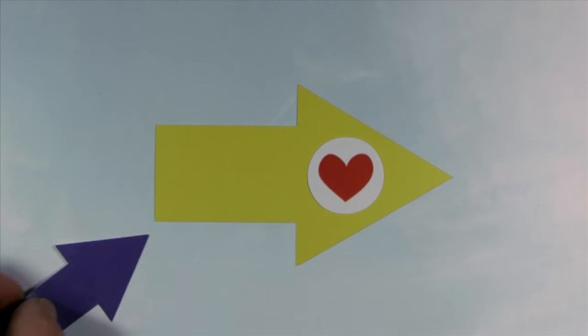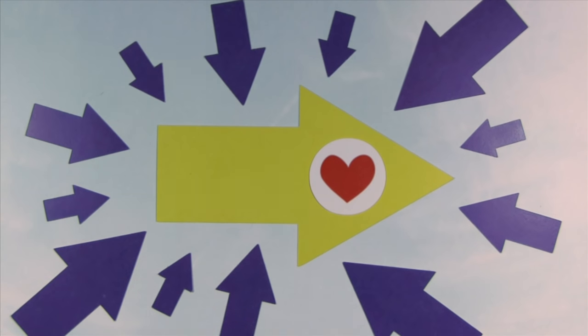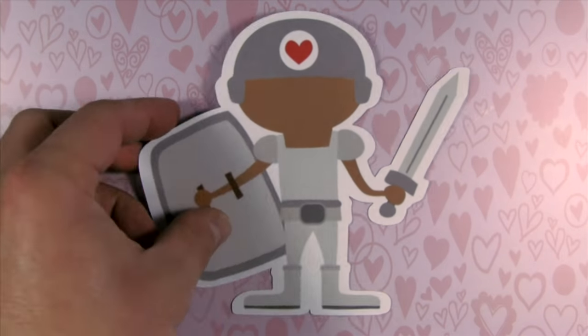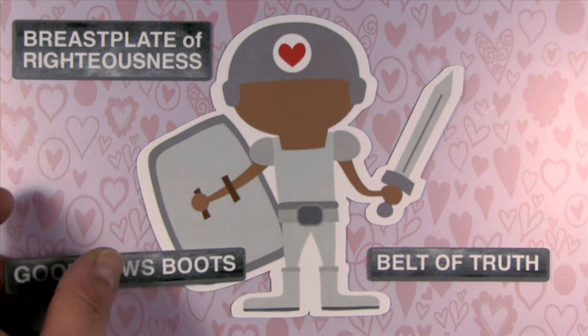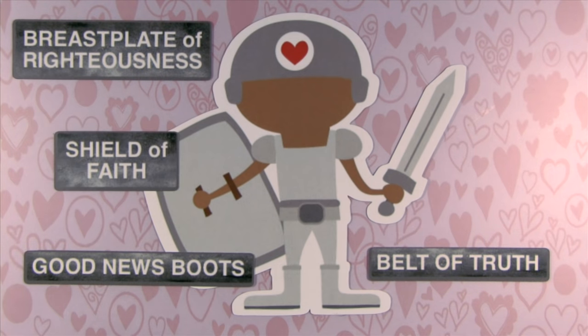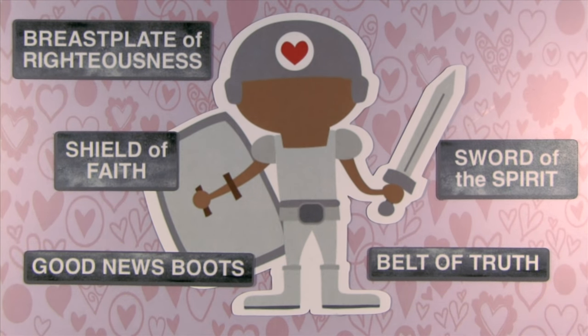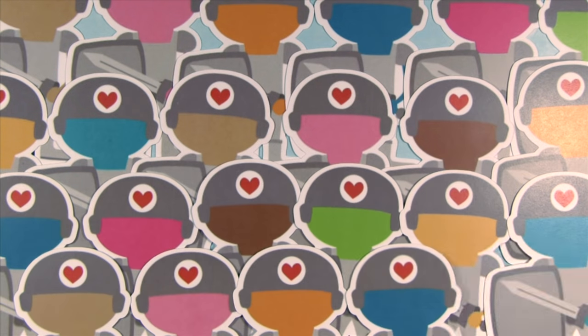So in case you missed it, here's the quick version. We're in a battle, God has an enemy. God gives us armor: a belt of truth, a breastplate of righteousness, good news boots, a shield of faith, the sword of the Spirit, and a helmet of salvation. We're on the winning side. So let's put on this armor and fight!